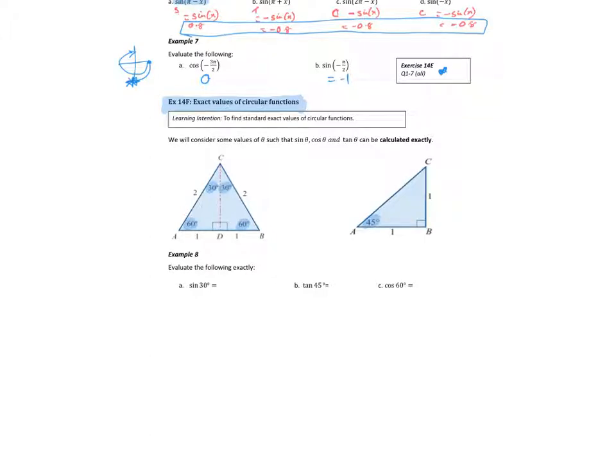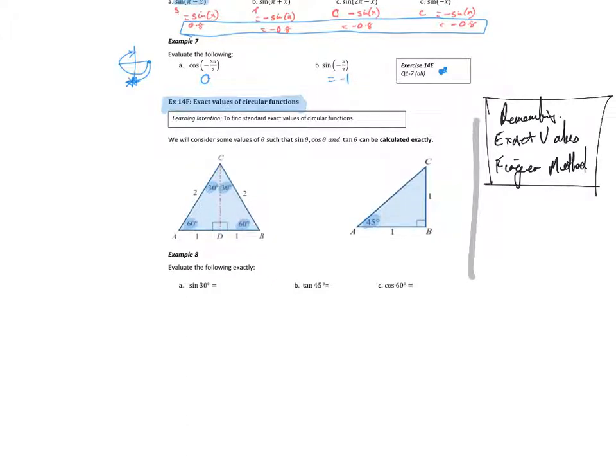A couple of ways we can remember these: we can remember these two triangles, on the next page is a table of values, and there's a finger method that we can go over when I get back, which involves counting on your fingers. I think the boys have used that in the past to some success.